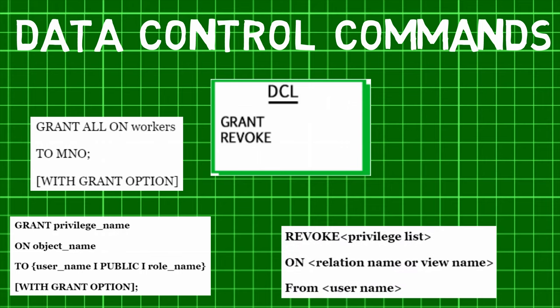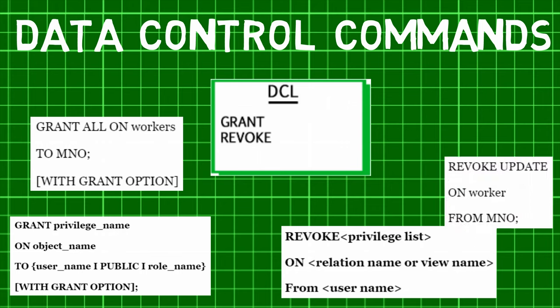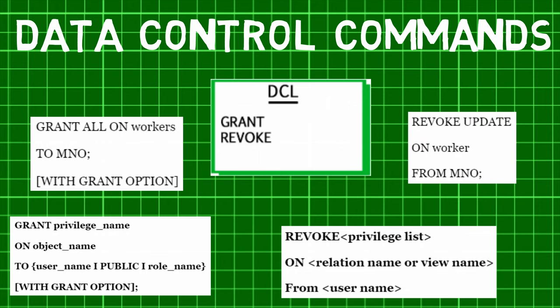Second comes the REVOKE command. The main purpose of the REVOKE command is cancelling previously denied or granted permissions. Through the REVOKE command, access to given privileges can be withdrawn. In simple words, permission can be taken back from the user with this command. The general syntax for the REVOKE command involves a privilege list, relation name, and user name.